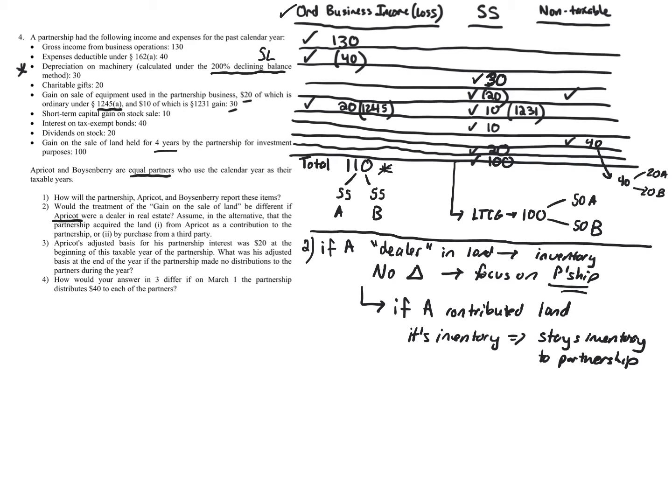So if A is a dealer and A contributed the land, then the partnership later selling it as an investment would still be considered inventory — affecting the problem by moving the $100 from long-term capital gain to ordinary business income. But if A is a dealer and the land was purchased by the partnership from a third party — not contributed by A — then it's fine. The taint of A being a dealer doesn't affect the partnership's gain character.